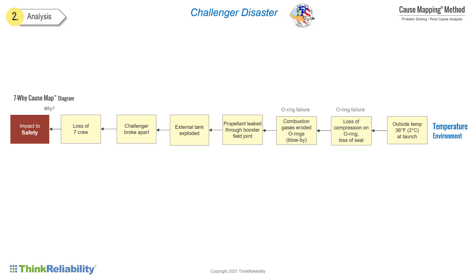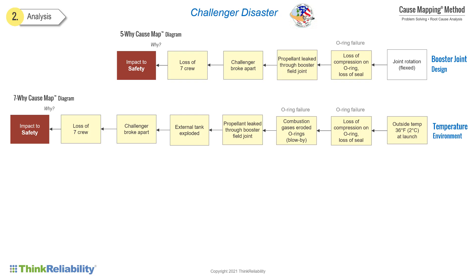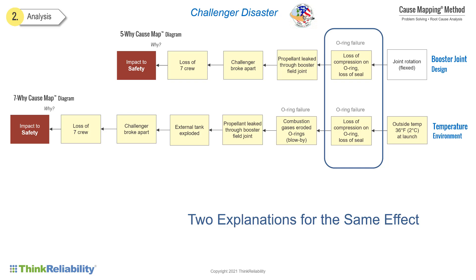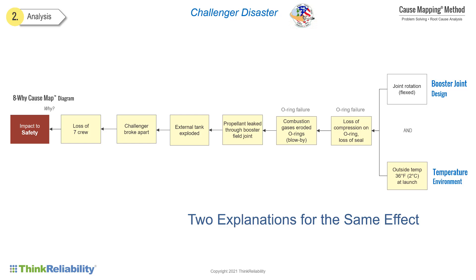This seven why shows how outside air temperature is causally related to the loss of the Challenger. Not everyone sees a problem the same way, so someone may build a five why explaining that the loss of compression on the O-ring was caused by joint rotation — the joint on the booster flexed too much because of the design. There are now two linear analyses on screen: a five why caused by booster design and a seven why caused by temperature. Two different analyses, both accurate, combine to provide one more complete analysis — it's now an eight why, which is a more thorough explanation of the issue.